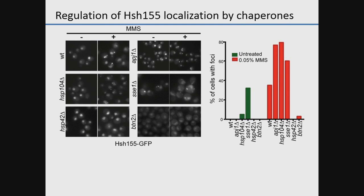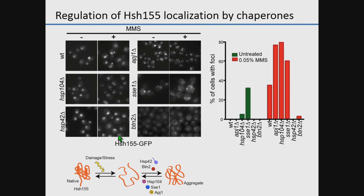There are also aggregases — HSP-142 and BTN2 — that drive proteins into quality control structures. When we mutate these, we see no foci at all. So HSH-155 is being unfolded and recognized by chaperones: some promote its movement into aggregates, others resolve them.